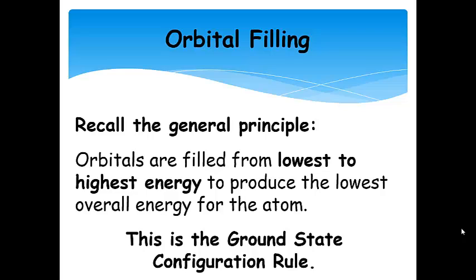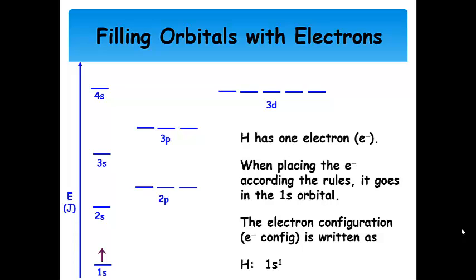That means we're going to follow Hund's rule and fill orbitals of lowest energy before orbitals of higher energy until we run out of electrons. Here is our orbital energy diagram with all of our orbitals. We have hydrogen first, and hydrogen has one electron. When we place the electron according to the rules into the orbital energy diagram, we put it in the 1s orbital.